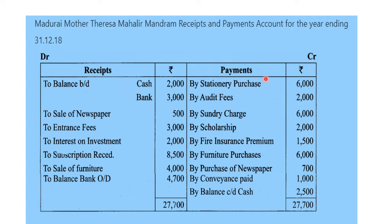On the payment side: stationery purchase — the fund is going out to pay for stationery. Audit fee: $2,000. Sundry charges: $6,000 — that is one expense. Scholarship: $2,000 — paid for scholarship purposes. Fire insurance premium: $1,500.